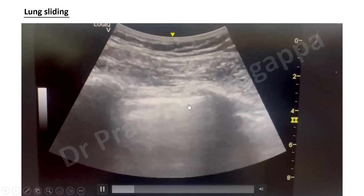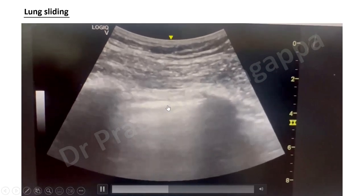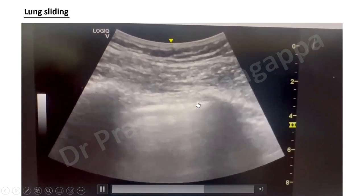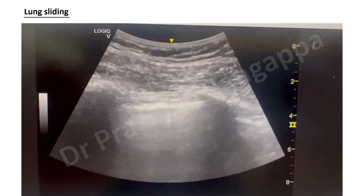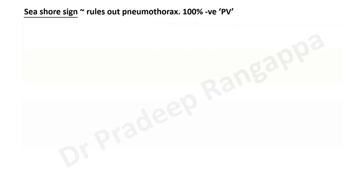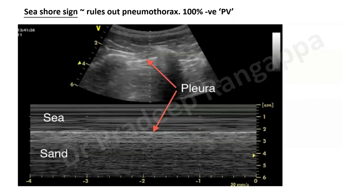The next important sign is lung sliding — you can see the sliding of the pleural line along the lungs. This is the second important thing to look for after A-lines. Lung sliding rules out the presence of pneumothorax in someone who is breathless, and it has 100% negative predictive value — meaning if lung sliding is present, it really rules out pneumothorax. If lung sliding is absent, there is a possibility of pneumothorax.